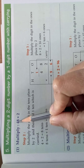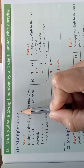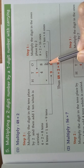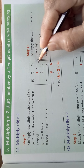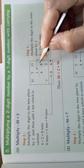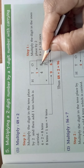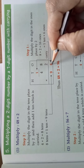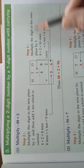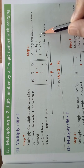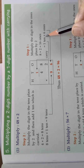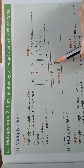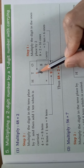Multiply 48 into 2 — that is a two-digit number by a one-digit number. We will write it in column form: 48 into 2. First, take the ones-place number, that is 8, and multiply it by 2. 8 twos are 16. 16 is 1 ten plus 6 ones, so write 6 here and take the 1 ten as the carry.